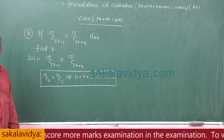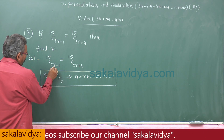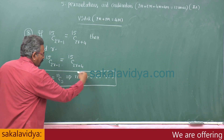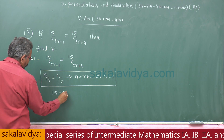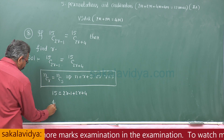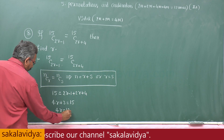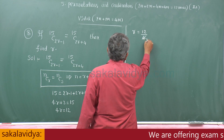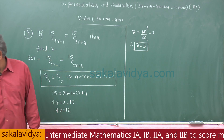This is a very important formula, useful for entrance and board examinations. Here, N stands for 15, so 15 equals (2r-1) plus (2r+4). That gives us 4r plus 3 equal to 15, so 4r equals 12, and r equals 12 by 4, which is 3. Therefore, r is equal to 3. Very simple.